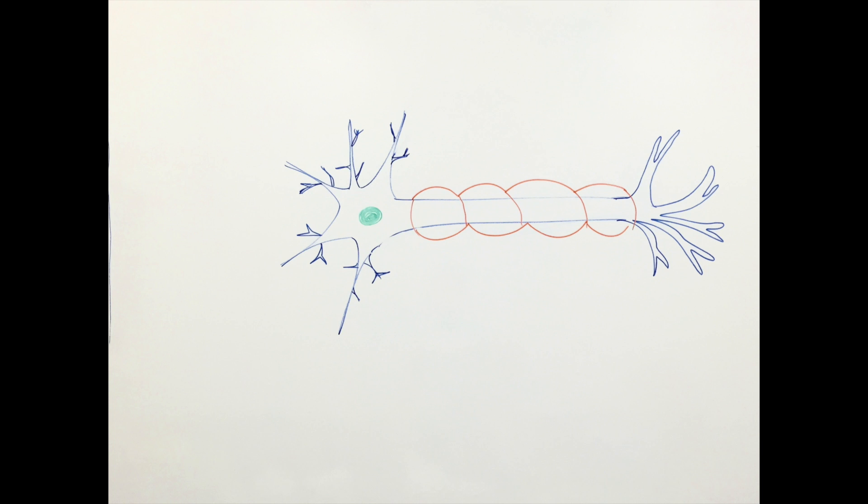The brain is made up of specialized cells called neurons. Neurons send electrical signals that get passed through the brain, allowing you to perform day-to-day functions. It's kind of like how wires send electrical signals from a source to your living room.